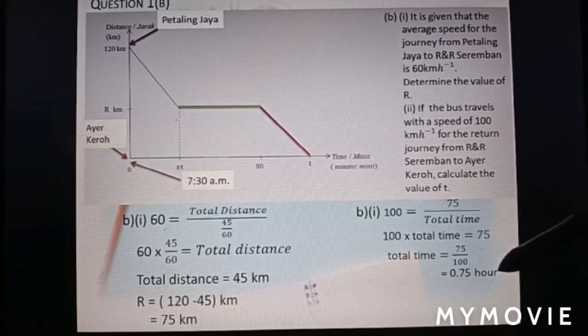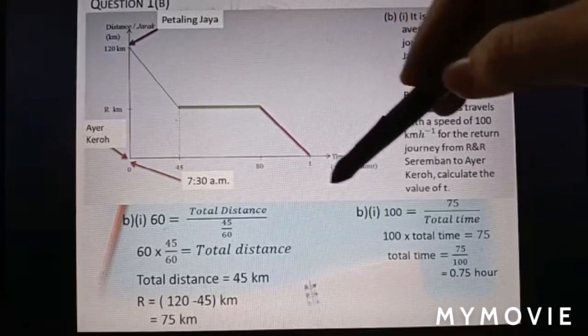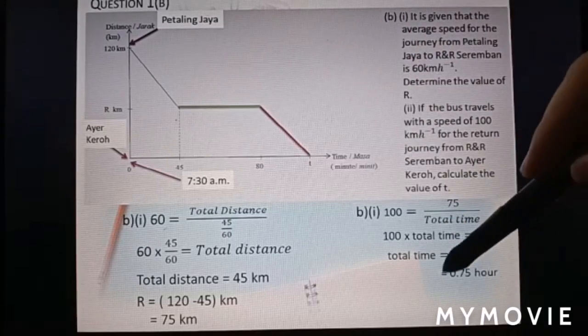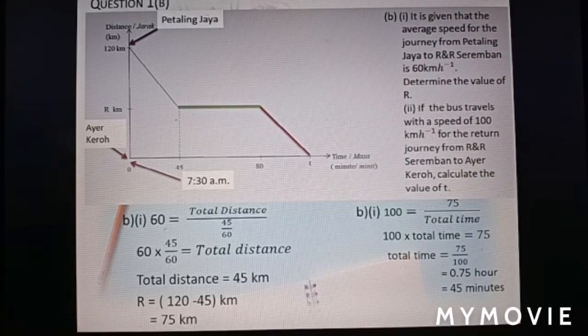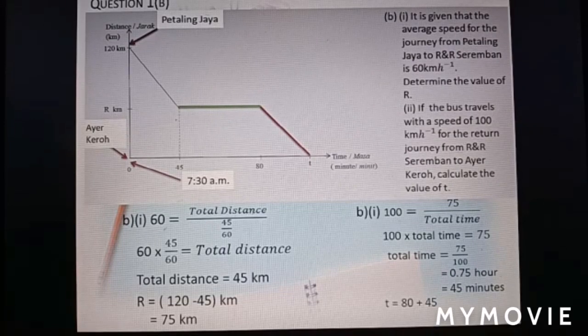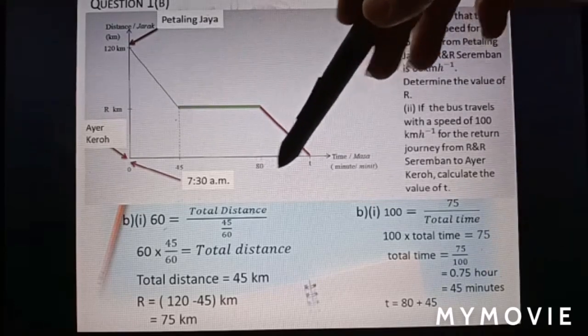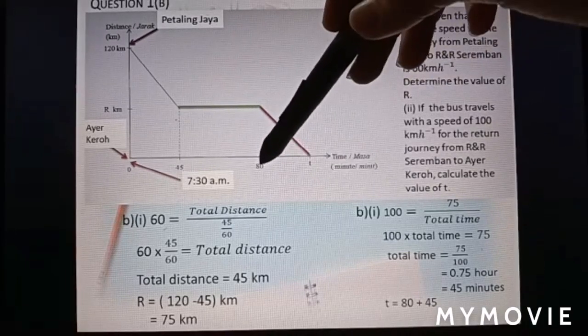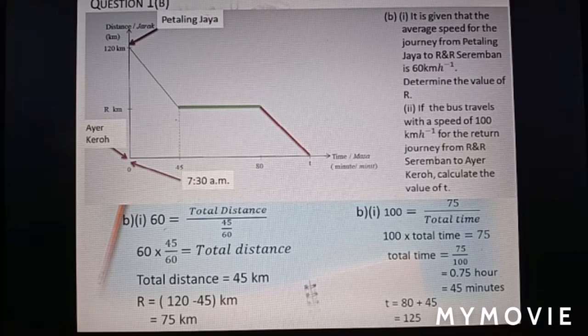100 times total time equal to 75. The total time is 75 divided by 100. We have 0.75 hour because the unit is in km per hour. So, the time that we find also in hour. But here, the horizontal axis here is time in minutes. So, we need to convert 0.75 hour to minutes. So, 0.75 times 60 equal to 45 minutes. 45 minutes is duration from 80 to T here, 45. So, to find the value of T here, we still need to add 80 plus 45 is 125.